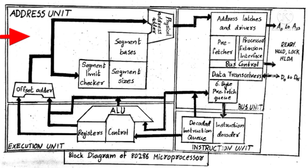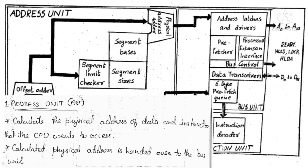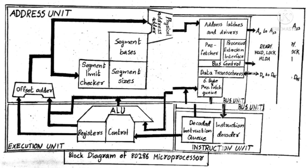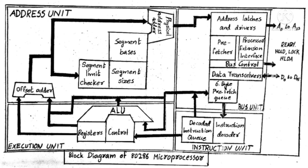The purpose of the address unit is to calculate the physical address to find the location of the instruction in memory. How this physical address is calculated has already been discussed in previous videos, so for those details you can go and watch that video. After calculating the physical address, it is given to the bus unit. The bus unit will send this physical address through the address bus to the memory and will fetch the instruction from that location.